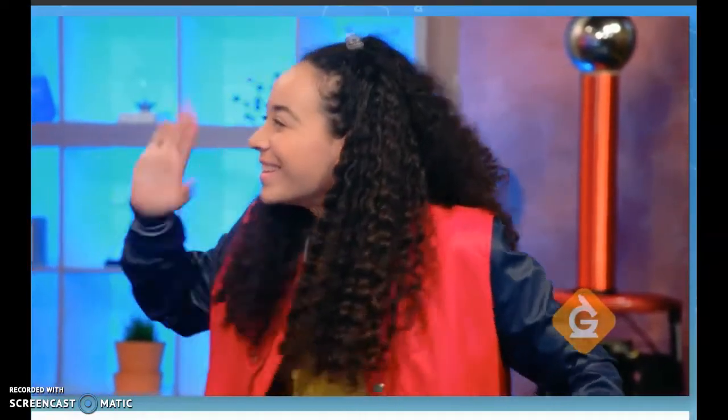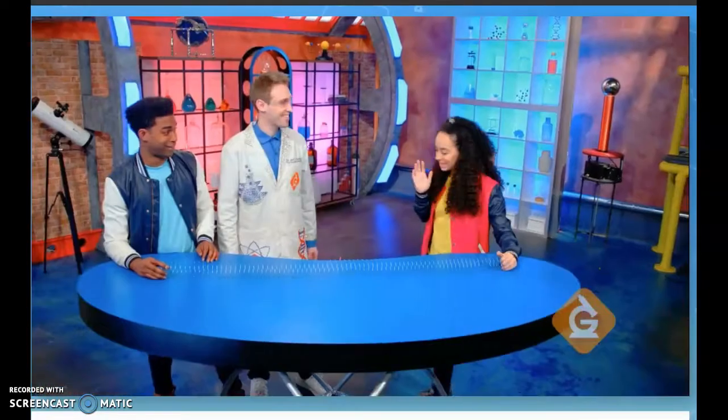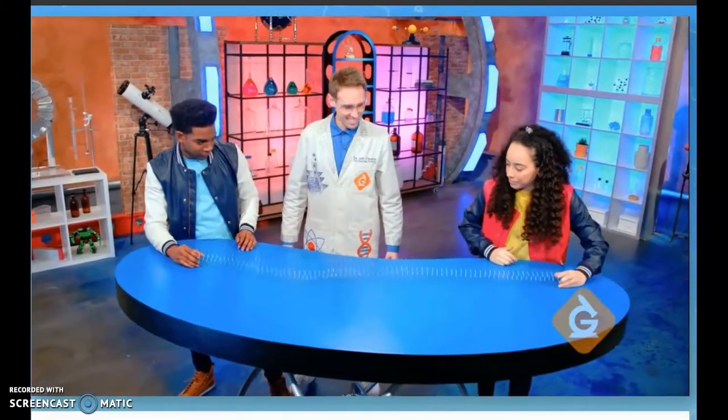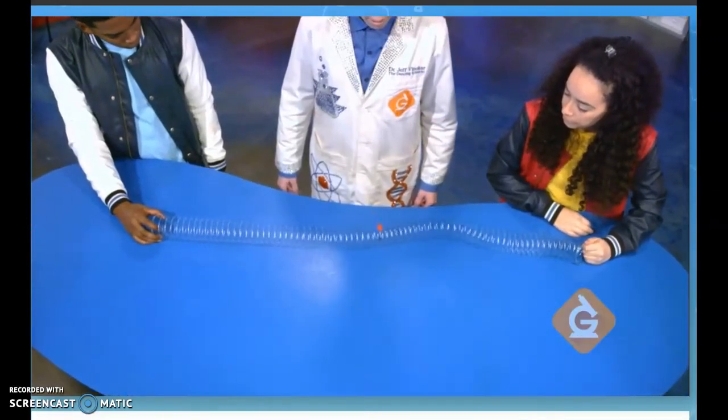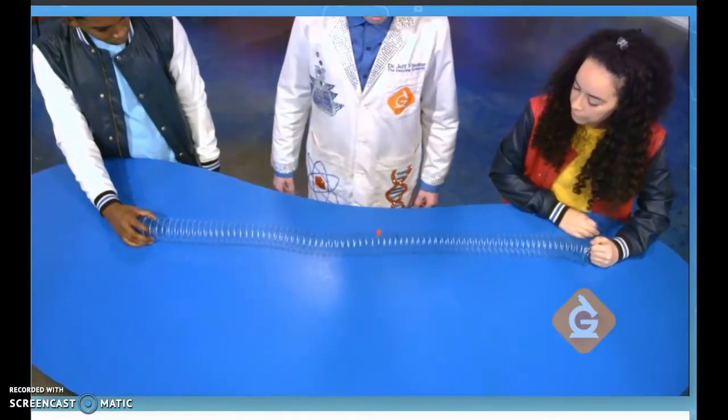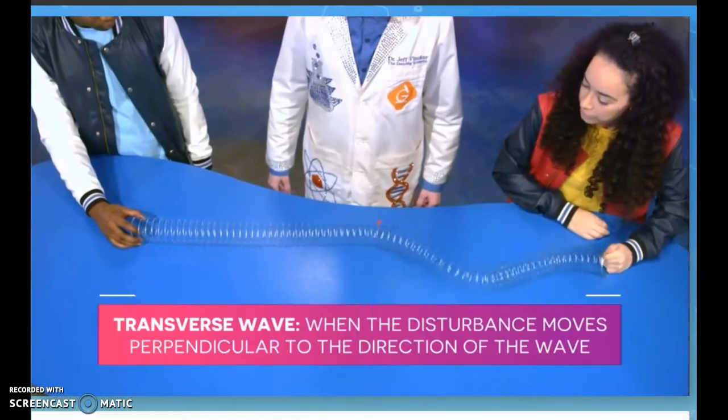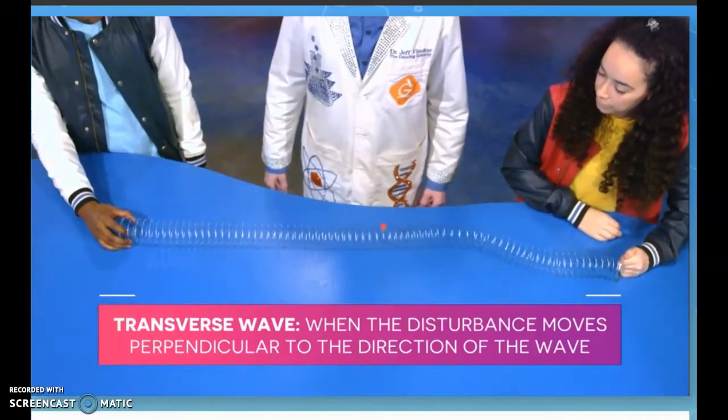Sound waves are caused by vibrations and they travel through the air, but they're a little different than water waves. Let's demonstrate with this extremely scientific tool. Zoe, you can take one end and Izzy, you can take the other end. The wave is going up and down — you can see it more clearly because of this red piece of tape added to it. When a wave moves up and down, we call it a transverse wave.